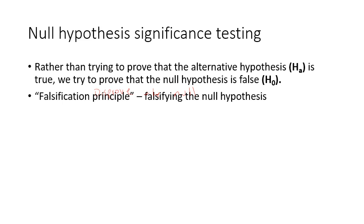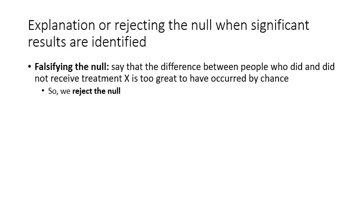For it to be actual science, it needs to be testable. When we use the term theory in science, we're typically referring to something that's been supported by a large amount of evidence. So if it's not falsifiable, it's not science — it's just a hypothesis.